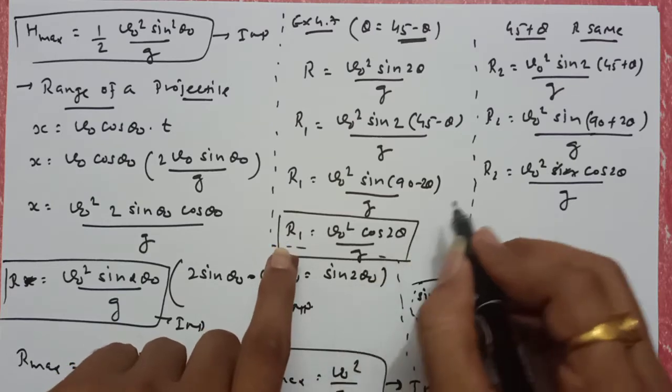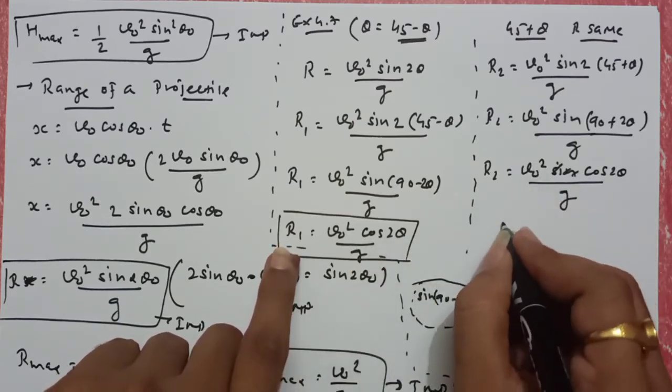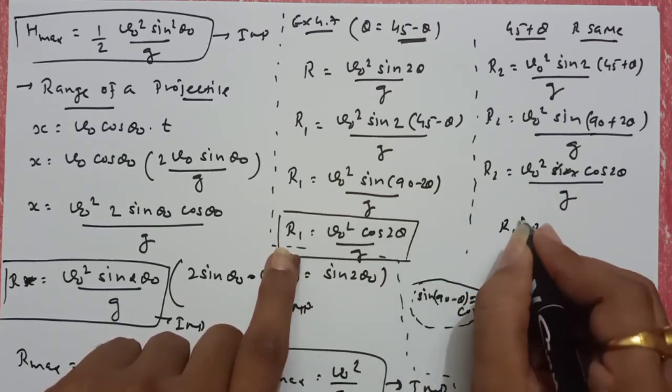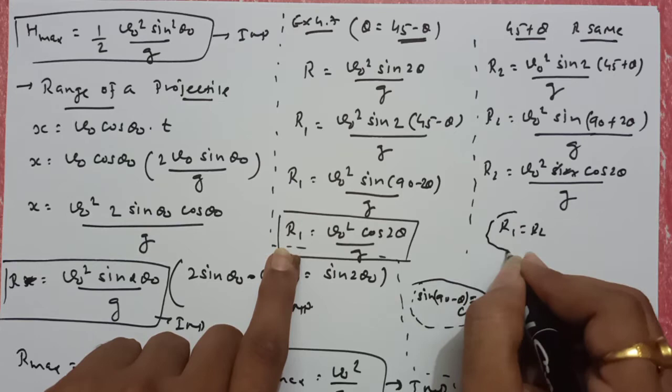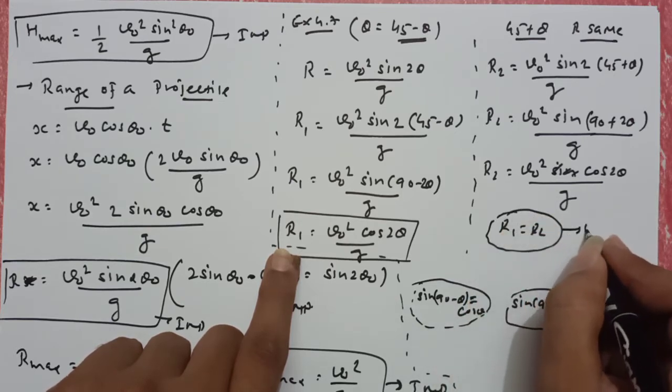So here we can say both the ranges are same, so R1 is equal to R2, जो कि हमें prove करना था।